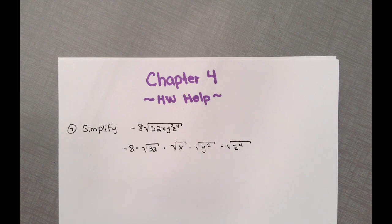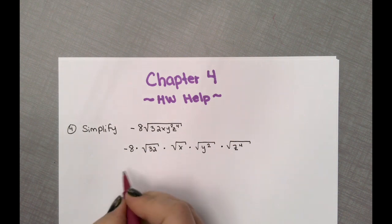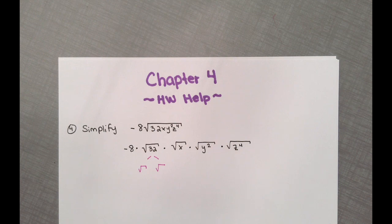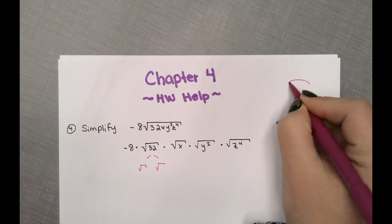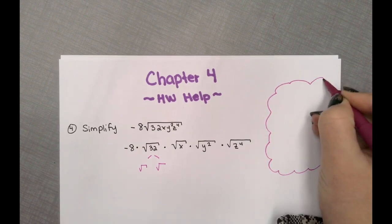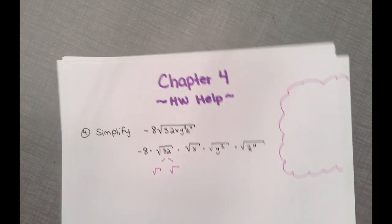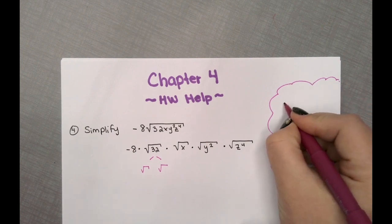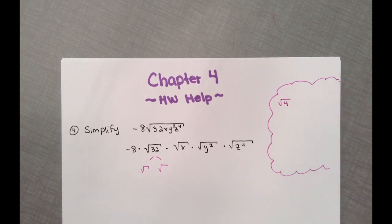We're going to continue splitting this up. The way I like you to work with variables and radicals is to convert them into a rational exponent — an exponent that is a fraction. You don't have to convert them if you don't want to. We want to know what two numbers multiply to 32 when one of them is a perfect square. A perfect square is where you have a clean, pretty answer — for example, 4 is a perfect square because the square root of 4 is 2.